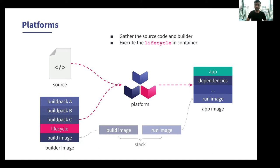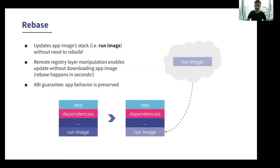This allows us to have a single tool that can take different builders and build all sorts of applications automatically. We also expose a special kind of image creation operation unique to the project called rebase. Rebase allows app developers or platform operators to rapidly update an application image when the stack's run image has changed. By using image layer rebasing, this command avoids the need to fully rebuild the application. By inspecting the application image, rebase can determine whether or not a new version of the app's base image exists, either locally or in the registry, and if it does, rebase updates the app's layer metadata to reference the new base image version.